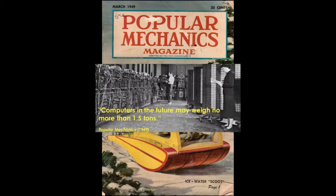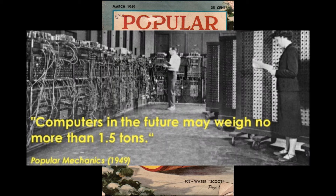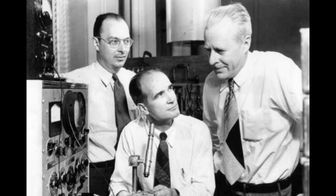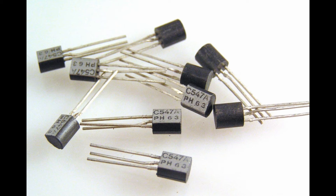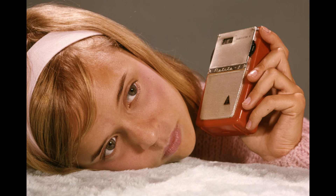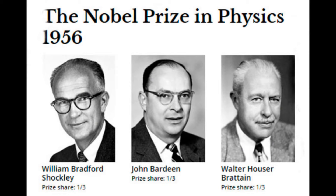UNIVACs were so expensive and difficult to run they could only be used by the military, large corporations, or universities. In 1949, Popular Mechanics magazine made the famous prediction that computers in the future may weigh no more than one and a half tons. But two years earlier, engineers working at Bell Laboratories invented the solid-state transistor. William Shockley and his colleagues won the Nobel Prize because the transistor — perhaps more than anything — has led to the explosion of affordable and reliable electronics that we have today.